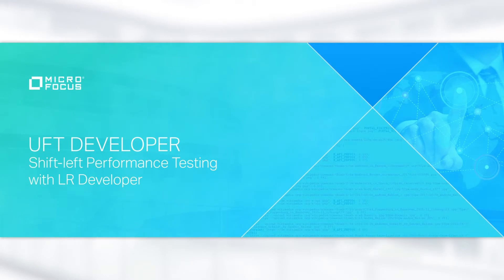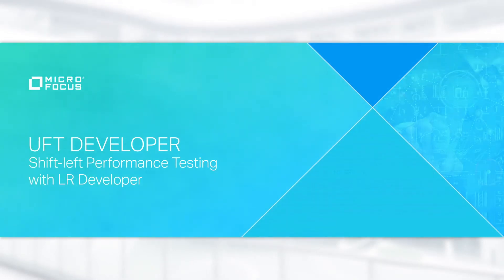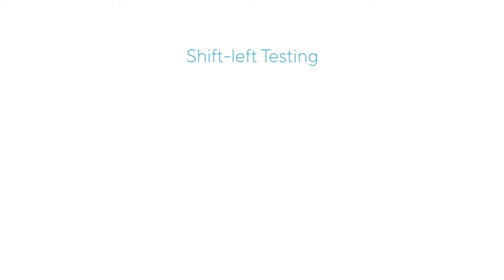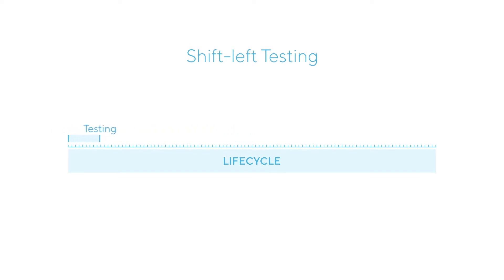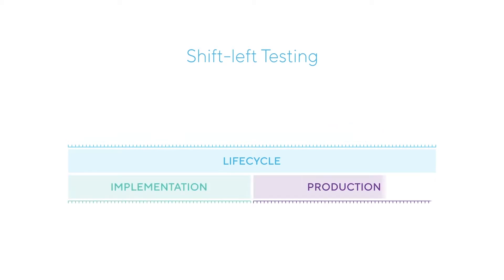In this video, we're going to show you how to implement shift-left testing using LoadRunner Developer and UFD Developer. Shift-left testing is becoming more and more popular in the software industry. Shifting left means to start testing as early as possible and to continue testing, ideally throughout the entire life cycle. This allows you to fix bugs early, and fixing bugs during implementation is considerably less expensive than fixing bugs within production.